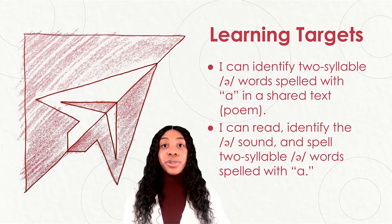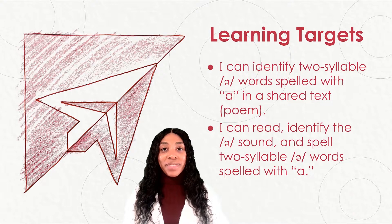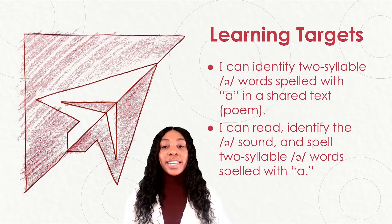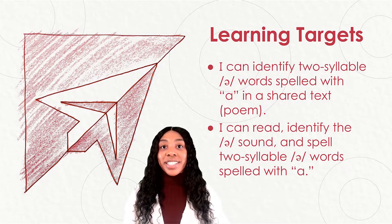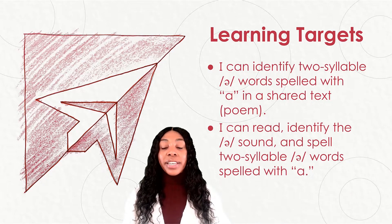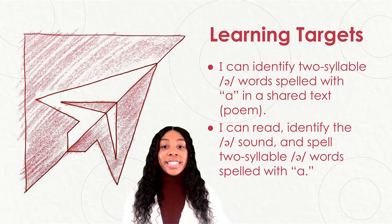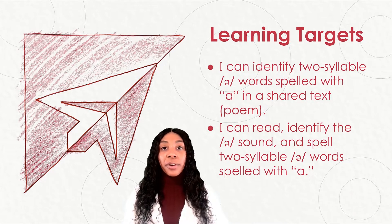We have two new learning targets for our lesson. Please follow along with me as I read them. Our first learning target says: I can identify two-syllable words spelled with A in a shared text. The second learning target says: I can read, identify the A sound, and spell two-syllable words spelled with A.